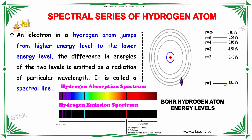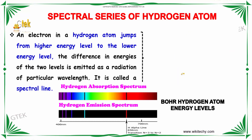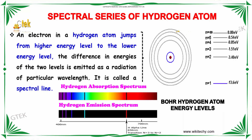Here you can see n equal to 1 corresponds to minus 13.6 eV, and where n is equal to 2, it is minus 3.20 eV. If an electron is jumping from higher energy to lower energy, the difference in energies of the two levels is emitted as radiation of a particular wavelength, and this wavelength is called a spectral line.